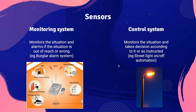In a control system, if values are out of range, the system takes action to bring them back within range. For example, if a smoke sensor detects fire in an apartment, a monitoring system only sounds a siren, while a control system activates a water sprinkler to extinguish the fire. Once the fire is out, the smoke sensor values return to normal, meaning the control system's actions have altered the values back within range.